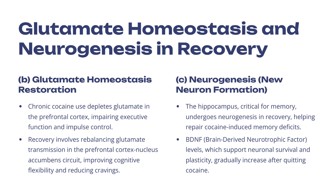Next, we move to the restoration of glutamate homeostasis. Chronic cocaine depletes glutamate in the prefrontal cortex, impairing executive function and impulse control. Recovery involves rebalancing glutamate transmission in the prefrontal cortex–nucleus accumbens circuit, improving cognitive flexibility and reducing cravings.